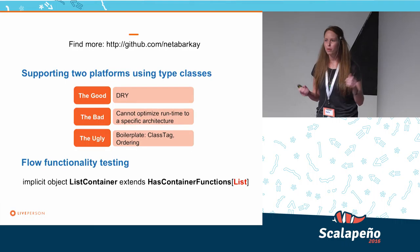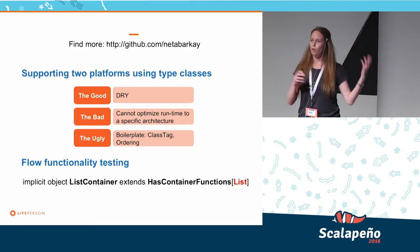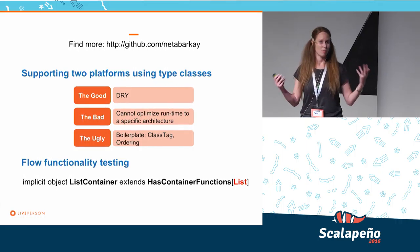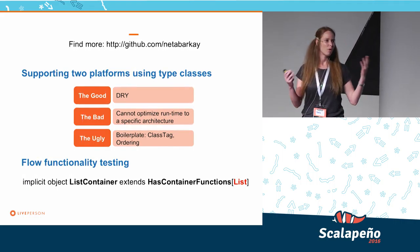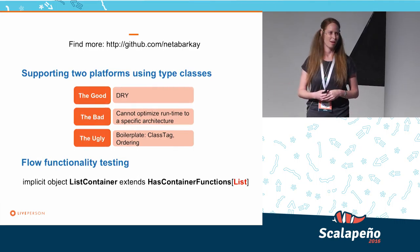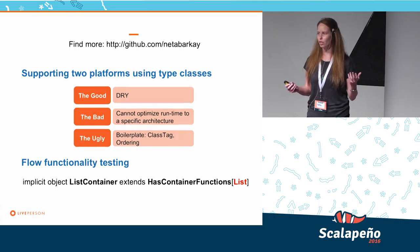So to sum up, we talked about supporting both MapReduce and Spark. I showed you an example of how we can use it for testing with lists. On GitHub you can find more examples of container functions more complex than filter and map, and you can also see how to write them in infix notation. That's it, thank you.